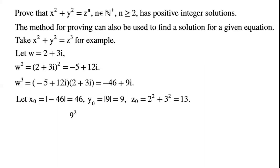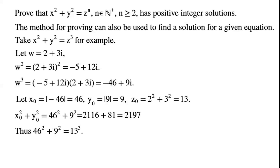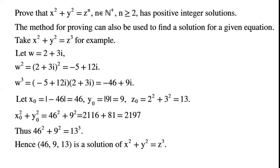Then x₀² + y₀² = 46² + 9² = 2,116 + 81 = 2,197. Thus 46² + 9² = 13³. Hence (46, 9, 13) is a solution of x² + y² = z³.